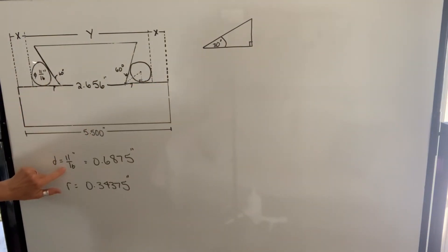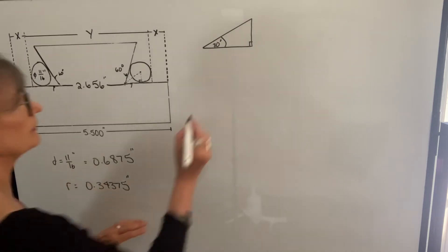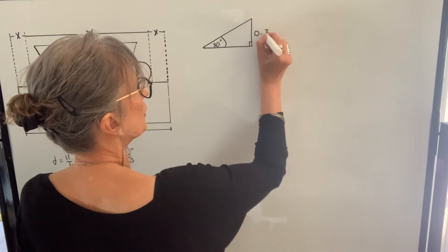This is the radius. The diameter is 11 sixteenths of an inch, which is 0.6875 inches. Radius is half of that, so the radius will be 0.34375. That's this value on my right triangle.